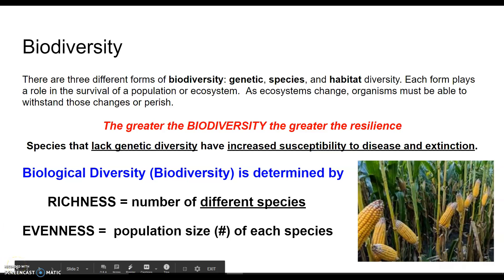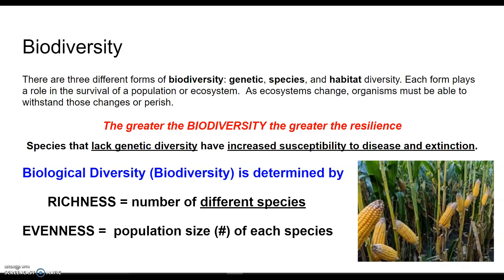The first thing we started off talking about was biodiversity in general. There are three different forms of biodiversity: we can have diversity within genetics, diversity among species, and diversity in the habitat as a whole. Each of these forms plays a role in the survival of the population and ultimately the survival of that ecosystem.